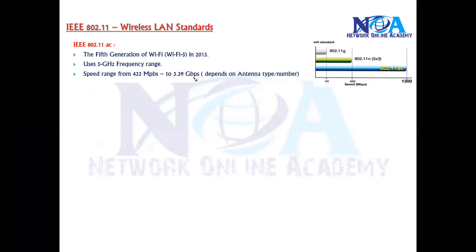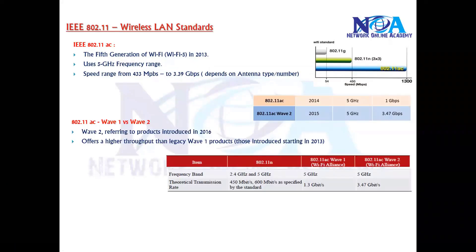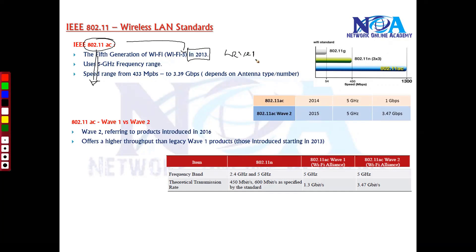There is one more thing to know about 802.11ac: it has something called Wave 1 and Wave 2. All wireless products running 802.11ac introduced from 2013 are referred to as Wave 1. Any wireless products using the same 802.11ac standard but introduced starting from 2016 are called Wave 2.